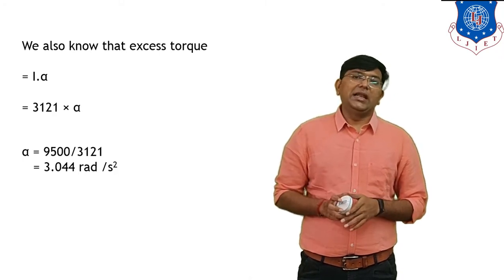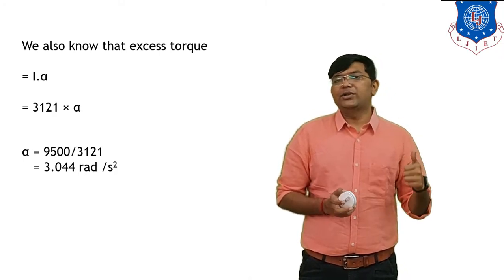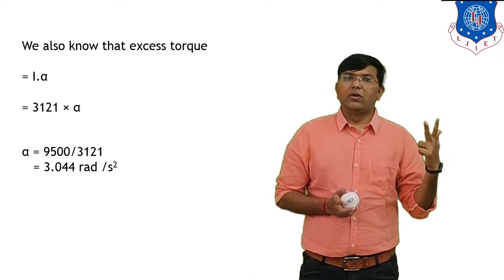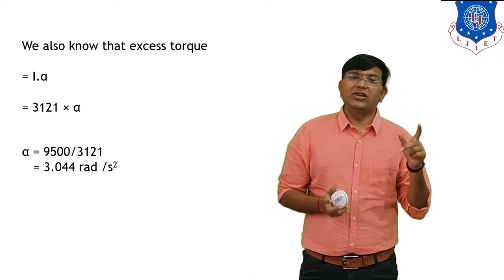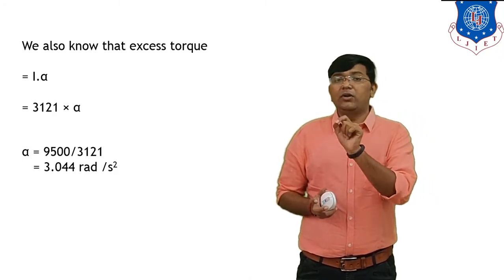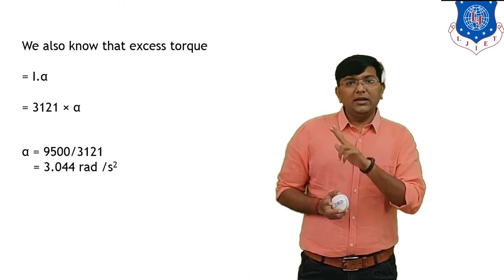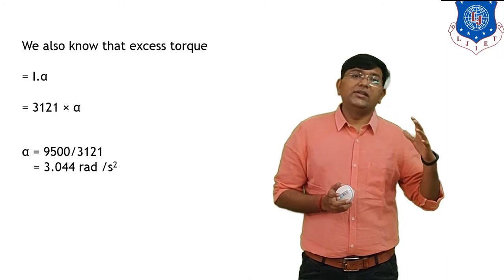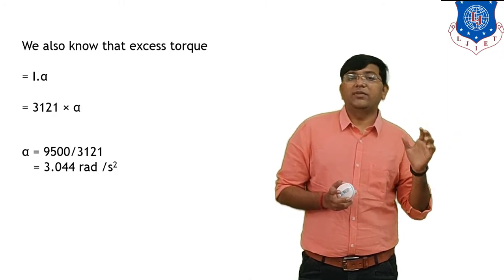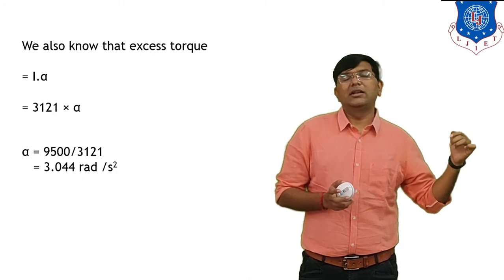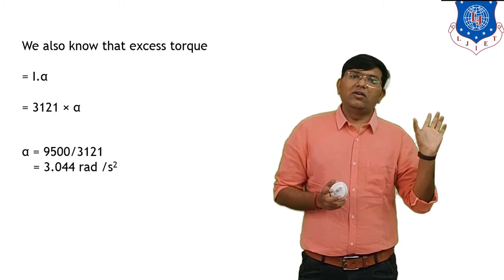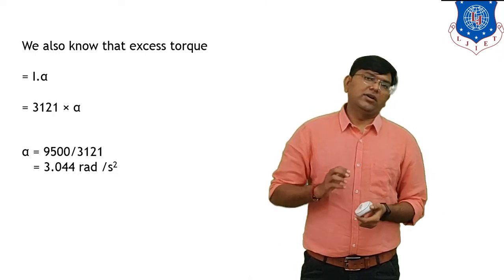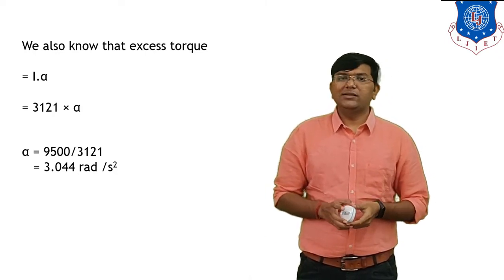So in this numerical we calculated three values: first, power; second, moment of inertia; and third, angular acceleration at theta equals 45 degrees. To solve this numerical you need some basic fundamentals of mathematics — integration and differentiation — which you have already learned. In the next topic we will start a new chapter: gyroscope.